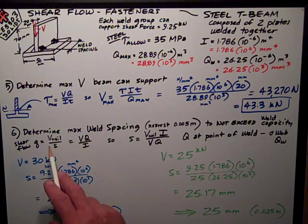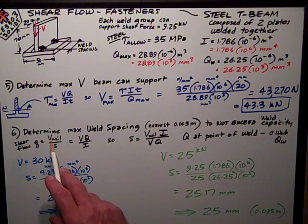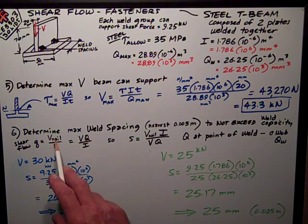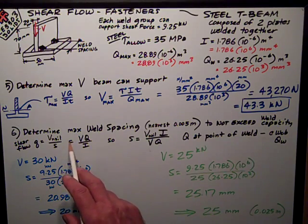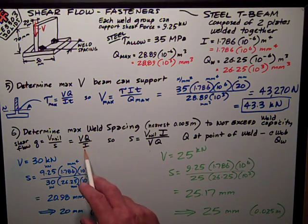Little q is equal to the V, the shear force of each nail or fastener, divided by the spacing S. And it's also equal to VQ over I.